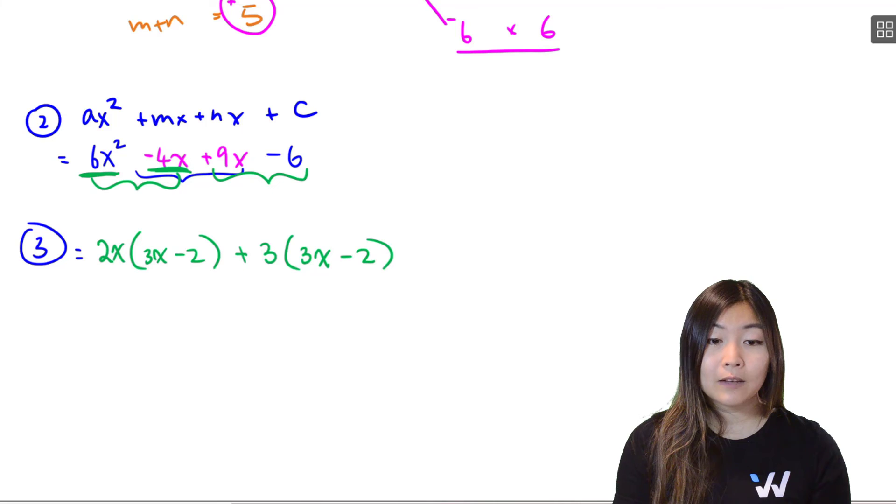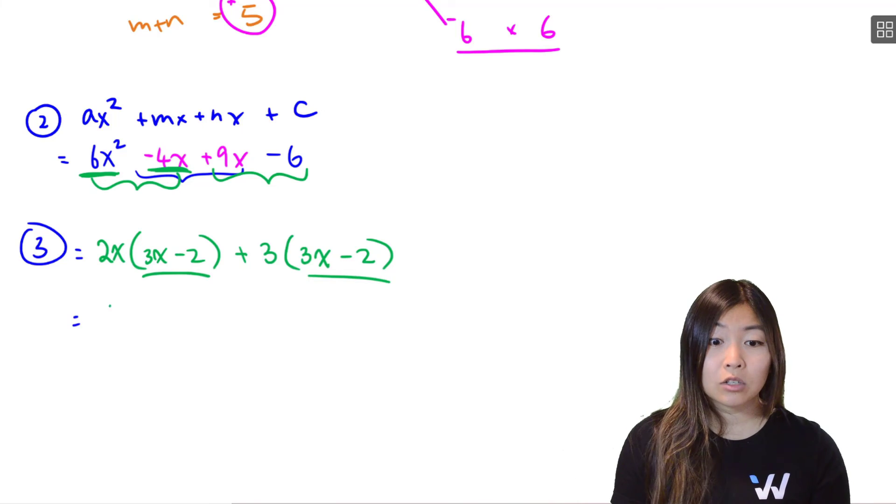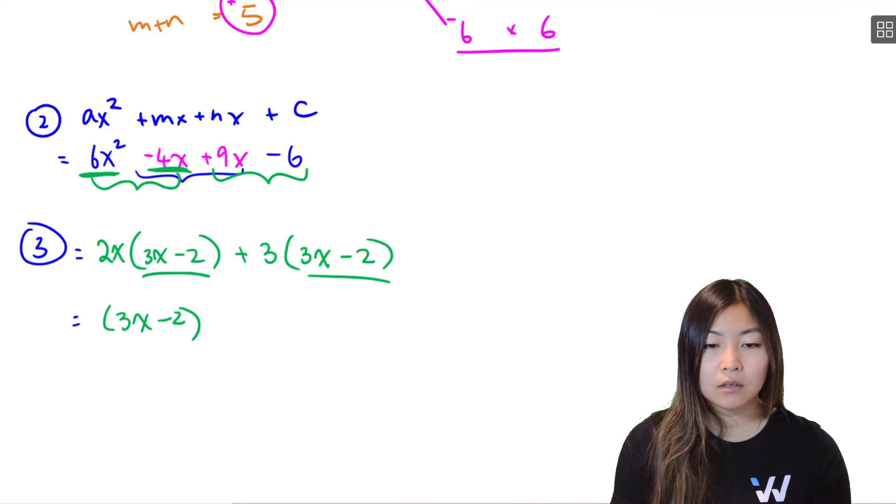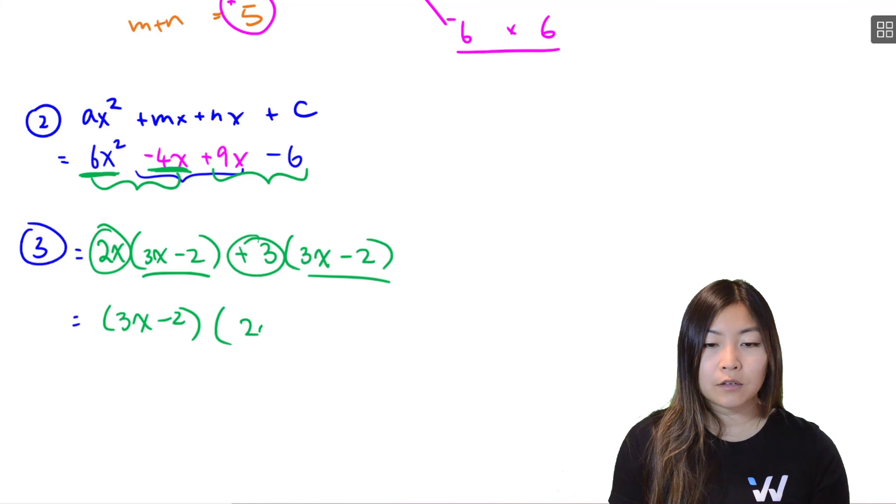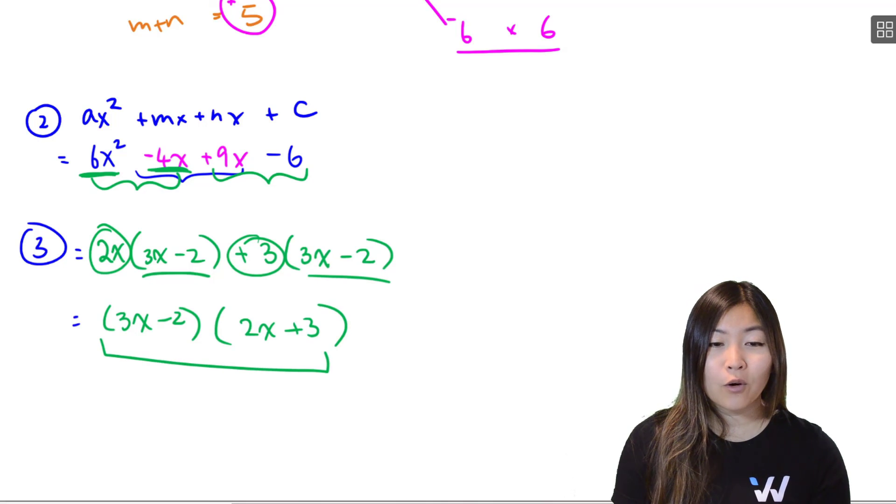Is there anything else we can factor out? Absolutely. This bracket, 3x minus 2, I can take it out in front, so I'm dividing it out. So if I divide them out, I'm left with the 2x and the positive 3. So this is the fully factor form.